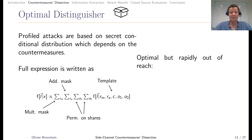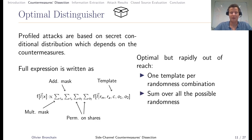This is optimal, but there is one template per combination of possible randomness, so it can rapidly become out of reach. You have to sum on everything, which makes the attack phase quite slow. To cope with this, we have to introduce some hypotheses.